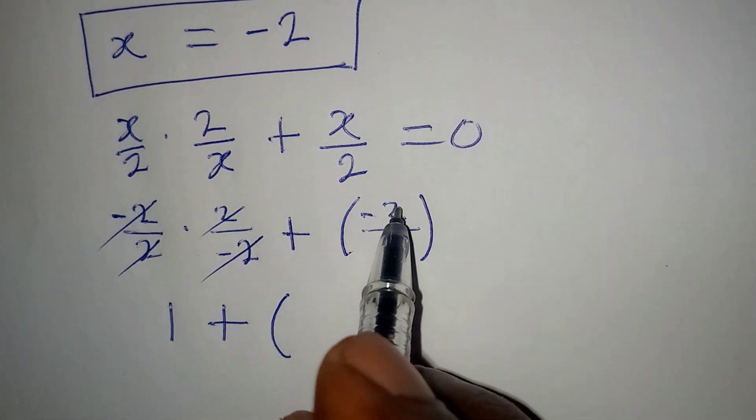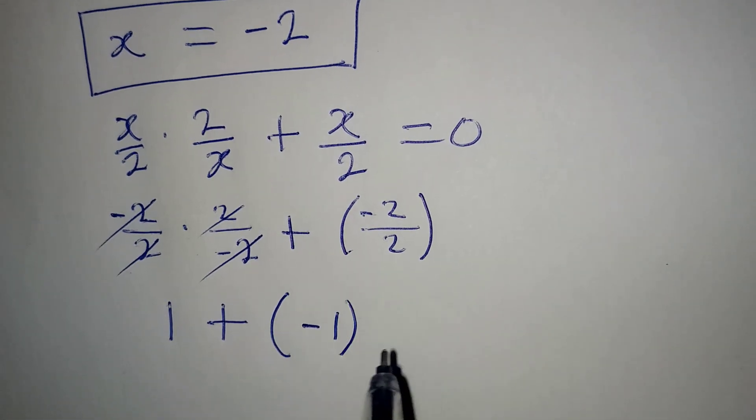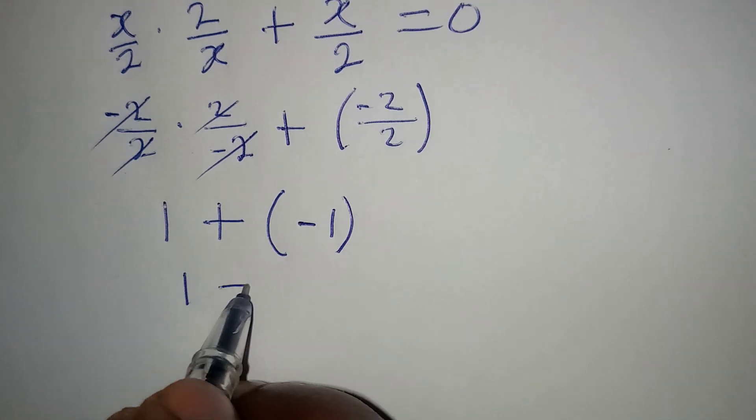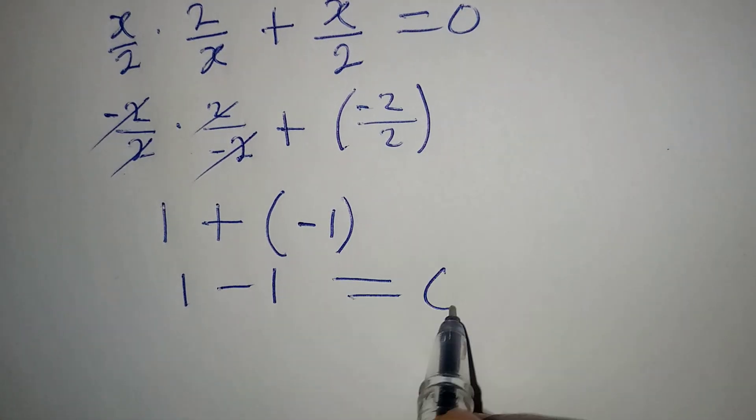Then we have plus minus 2 over 2, which gives us minus 1. If we open this bracket we are going to have 1 minus 1, which is giving us 0.